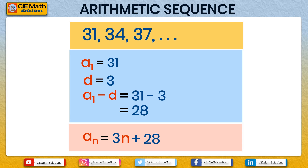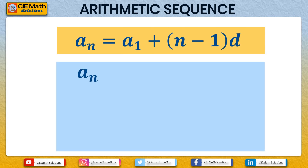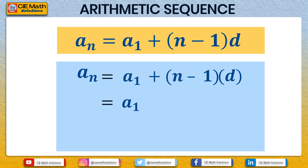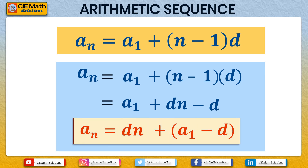This confirms that the formula and the shortcut method give the same answer. The shortcut actually comes from the formula itself: an = a1 + (n − 1) × d. Expanding, we get dn − d + a1, which rearranges to dn + (a1 − d). So the shortcut is: multiply the common difference d by n, then add (a1 − d) as the constant of the general rule.